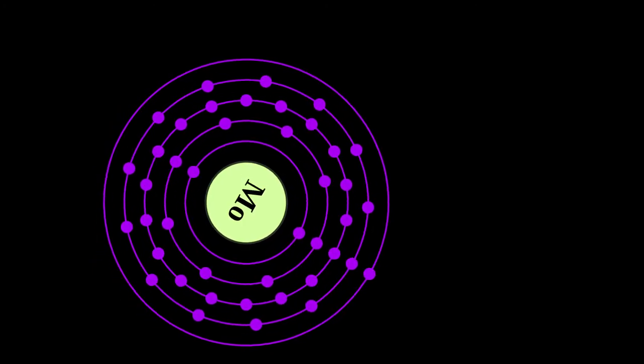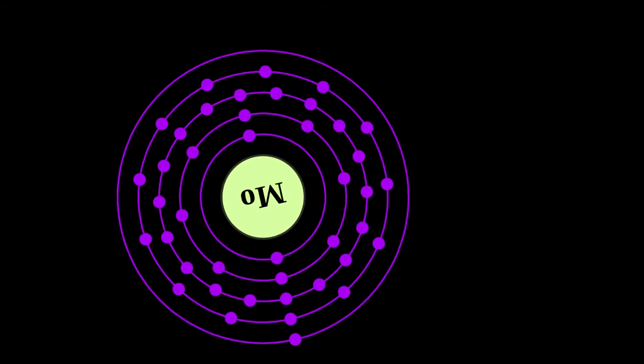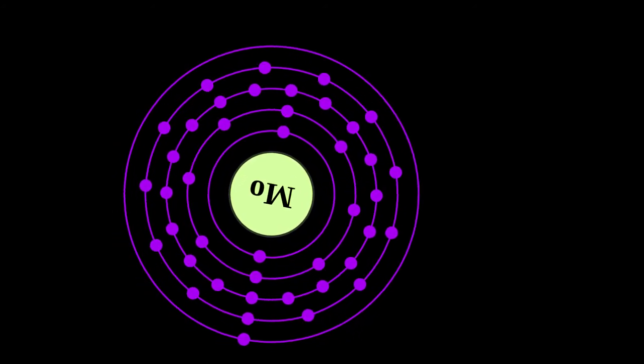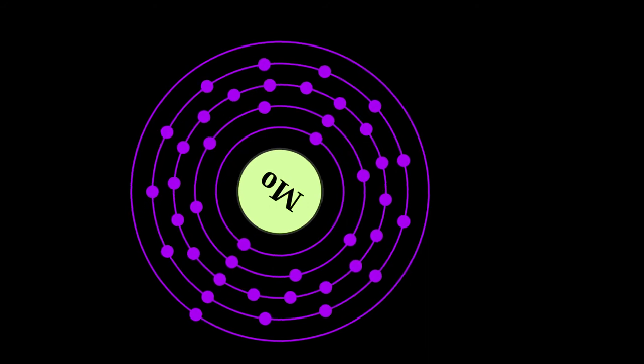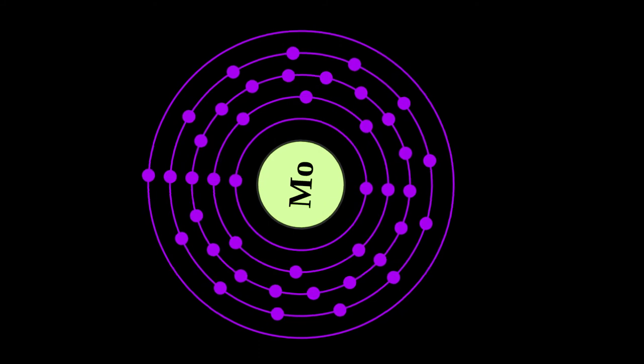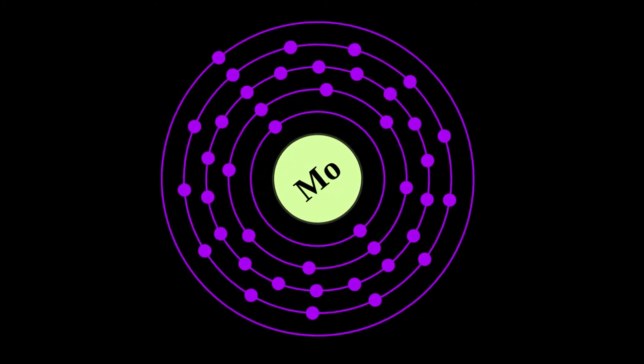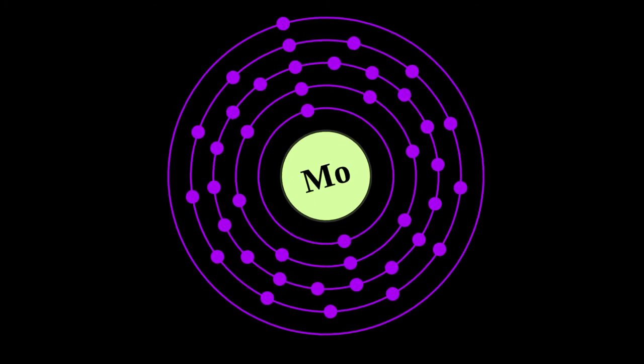These nitrogenases contain molybdenum in a form different from other molybdenum enzymes, which all contain fully oxidized molybdenum in a molybdenum cofactor. These various molybdenum cofactor enzymes are vital to the organisms, and molybdenum is an essential element for life in all eukaryote organisms, though not in all bacteria.